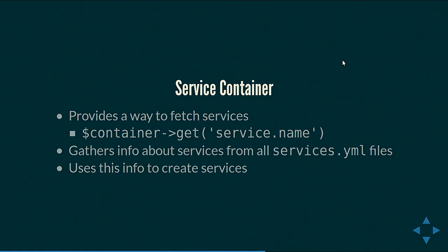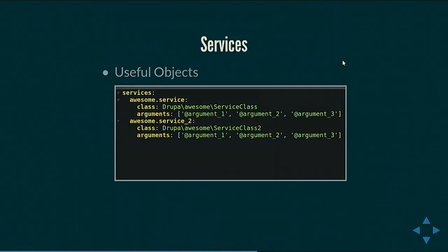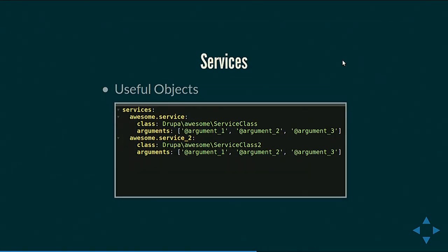Next, the service container. The service container is a special object — another object — that allows us to create and get the services we talked about previously. The syntax is: container object, call get, and pass the service name to it, and we get that object which we can then use in our application. When the service container is created, it gathers the list of all services defined from all services.yml files — just like routing.yml, these can be defined by Drupal core, Drupal contrib modules, or your own custom modules — and uses that info to create these services.